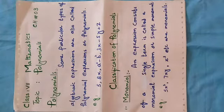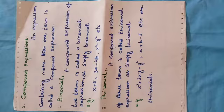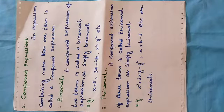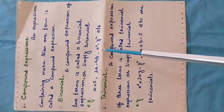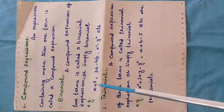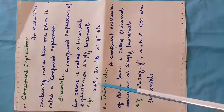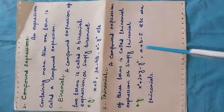The second one is compound expressions. An expression containing more than one term is called a compound expression. For example, binomials and trinomials are compound expressions. A compound expression of two terms is called a binomial expression, or simply a binomial. For example: x plus y, 3a minus 4b, and x² minus y². Each of these consists of two terms, so they are called binomials.